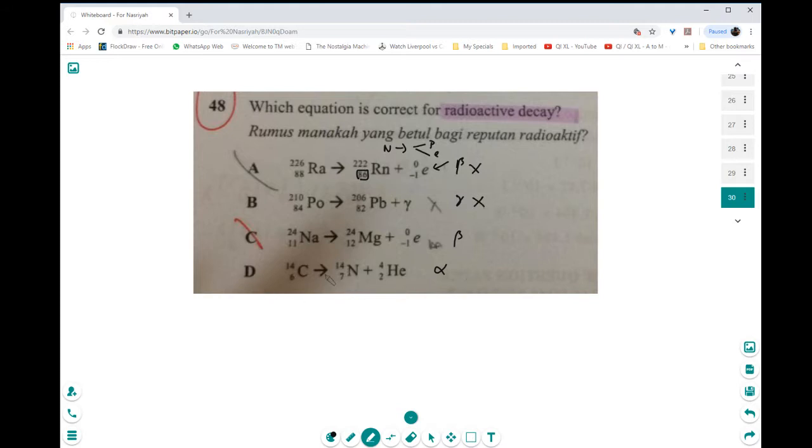Try D first. Let's see D. No, this is alpha. For alpha, these two numbers, if you add them up, must correspond to this number here. But it doesn't, right? All right? So this is also wrong.